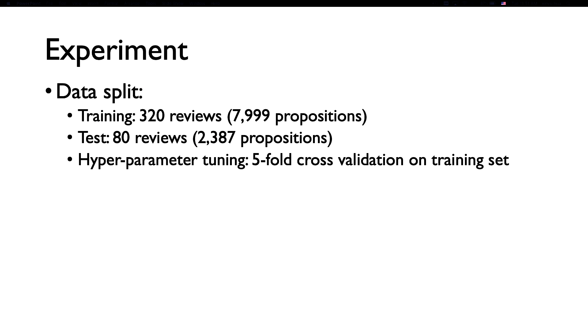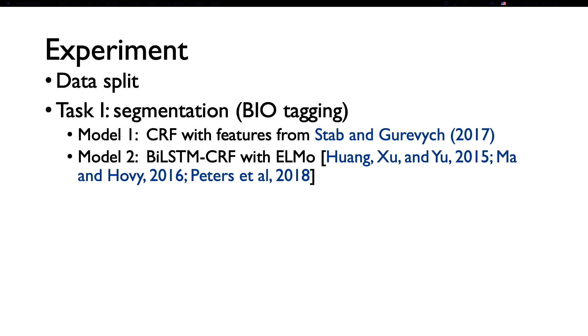We divide this dataset into 320 reviews for training and 80 reviews for tests. Because we know that this dataset is pretty small, we use a five-fold cross-validation on the training set for hyperparameter tuning. Similar to the annotation, we consider two tasks here. The first is a BIO tagging task. In order to segment the review text into propositions, we consider two models. One is a CRF model with hand-crafted features. The second model is a neural network-based model enhanced with the ELMo embedding.